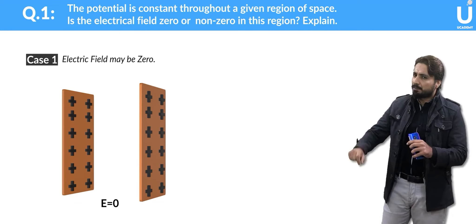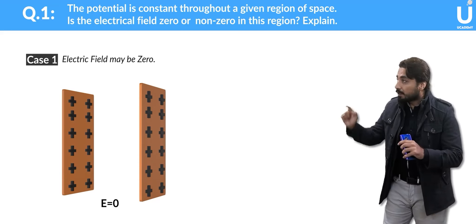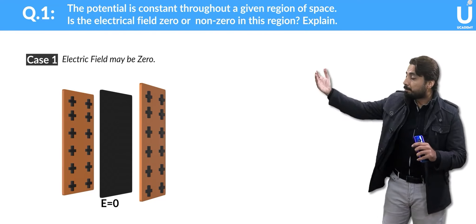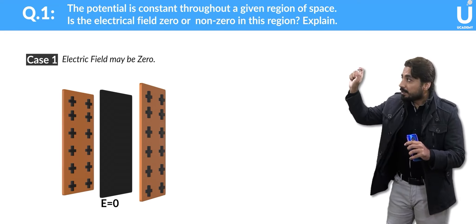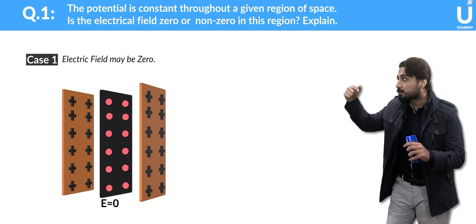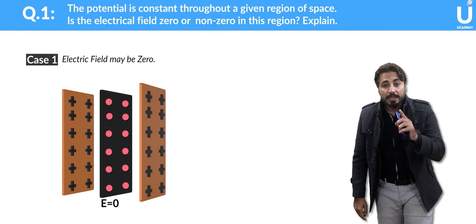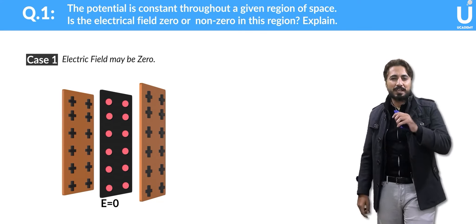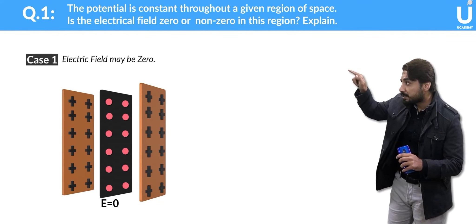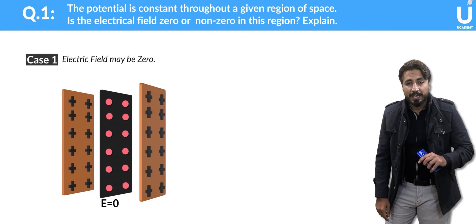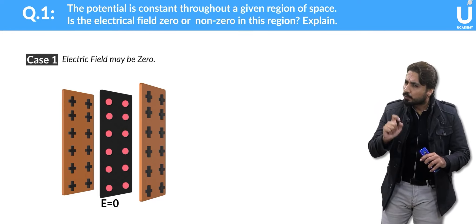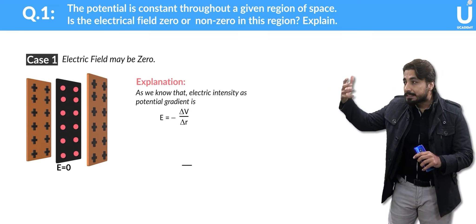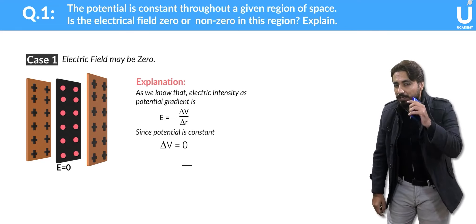If you consider the two plates and look at the center, the electric field is zero. The plate is parallel, and because the surface points are the same, we can say that on the whole surface at each point the potential value is the same — it is an equipotential surface. Since the potential is the same on the whole surface, the potential difference ΔV is zero. We know that electric field E equals minus ΔV over ΔR. If ΔV is zero, then E is zero.